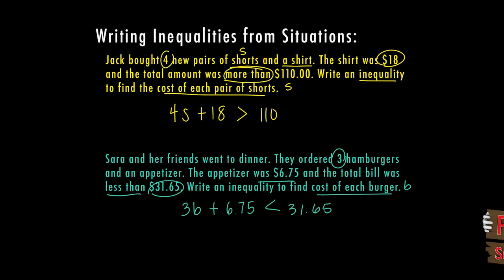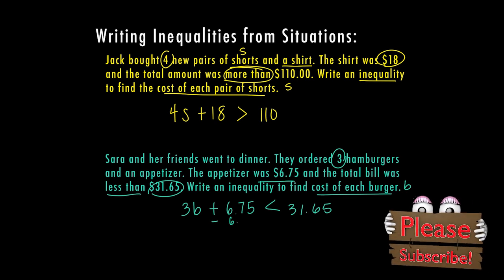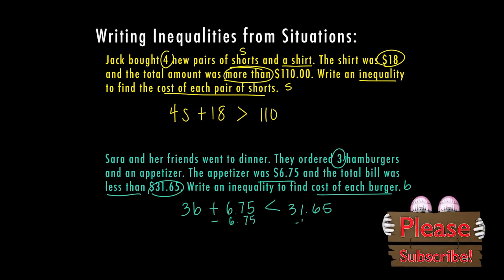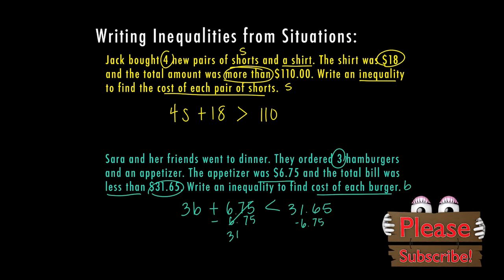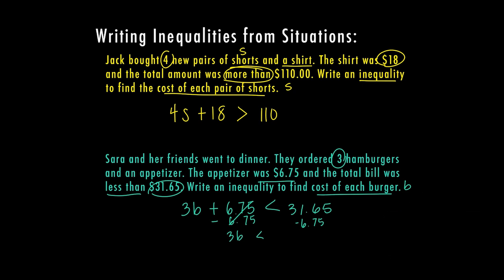We are going to first subtract the 6.75 from our total cost. So now I know the three burgers cost less than $24.90. When I divide both sides by three, the cost of each burger is less than $8.30.